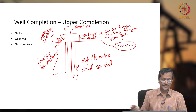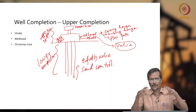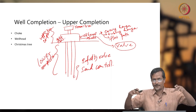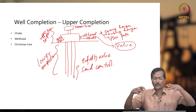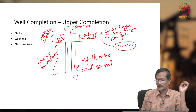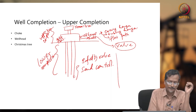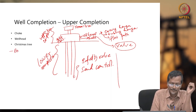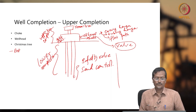Next is the Christmas tree. When you are drilling a hole, first you install a wellhead during the drilling stage. The wellhead will contain one system called BOP — blowout preventer.